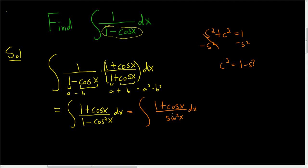And it still might not be clear how this helps. It doesn't seem that we can do a u substitution and get this to work. So maybe let's break it up. So this is 1 over sine squared x dx plus cosine x over sine squared x dx.